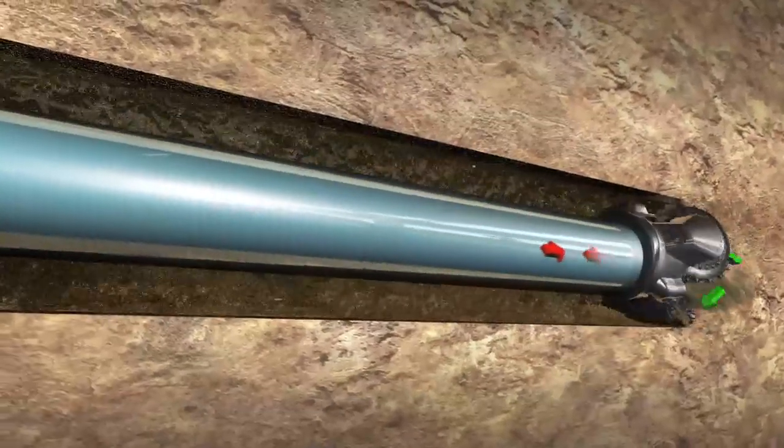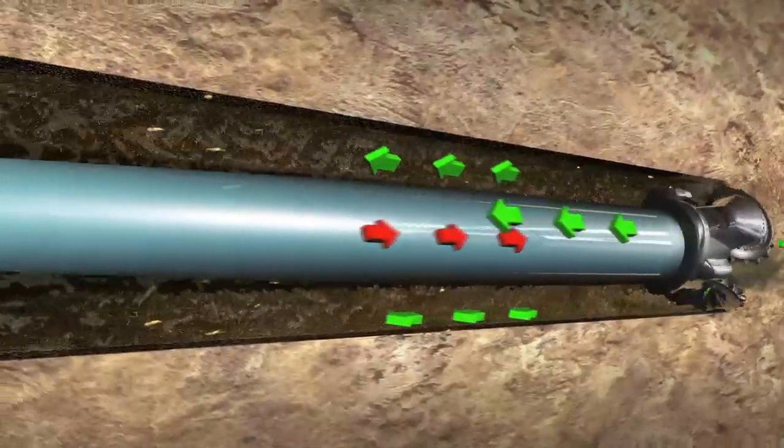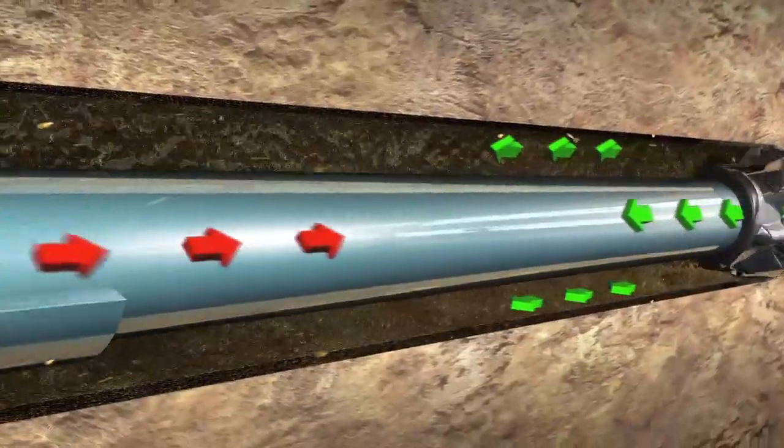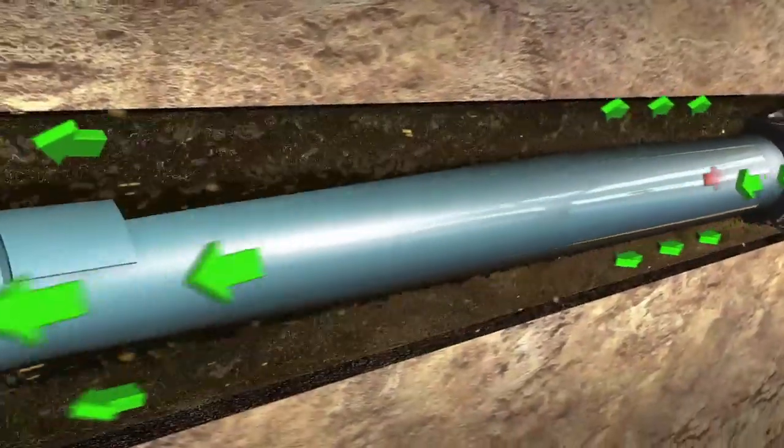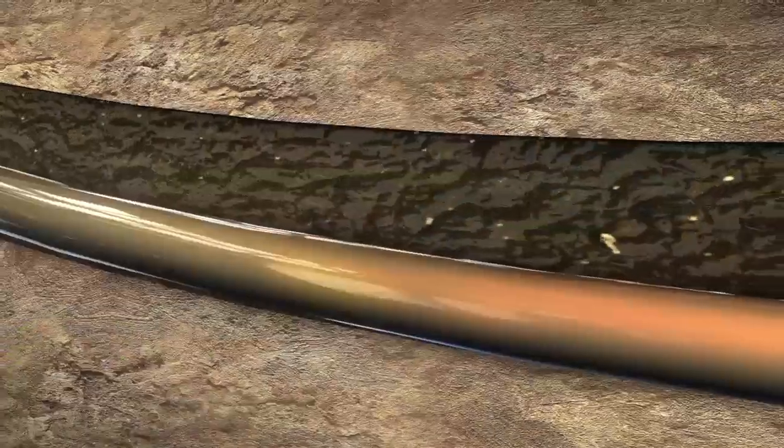The fluid helps lubricate the drill pipe and cool the bit, while the clay platelets create a seal along the wall of the hole, which helps maintain the hole's structure.